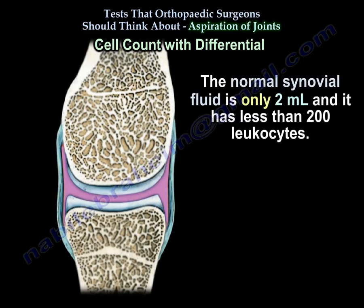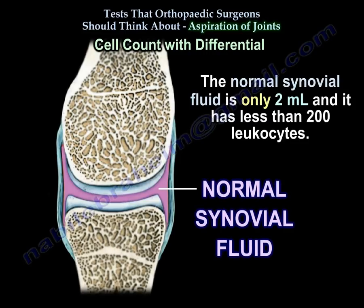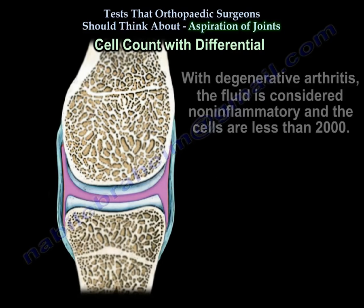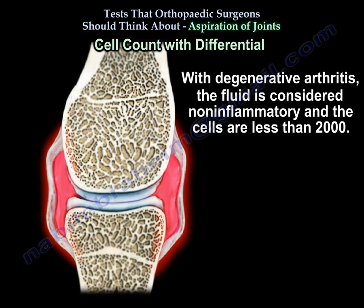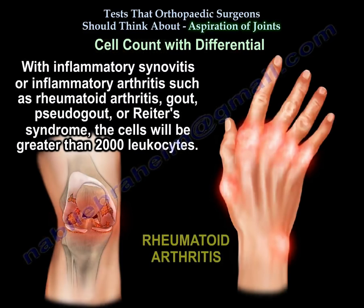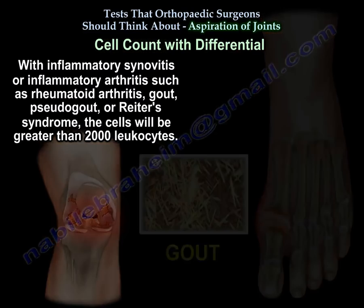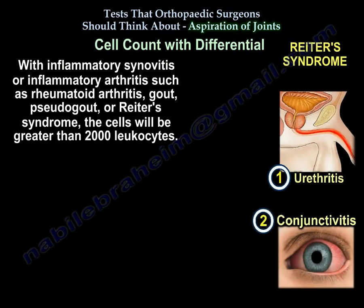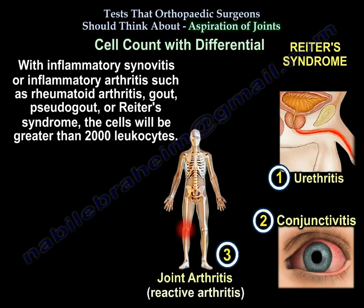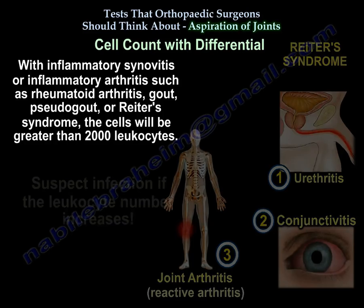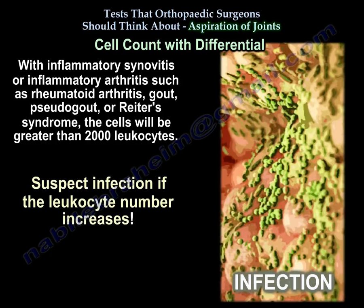Normal synovial fluid is only 2 ml and has less than 200 leukocytes. With degenerative arthritis, the fluid is considered non-inflammatory and the cells are less than 2,000. With inflammatory synovitis or inflammatory arthritis such as rheumatoid arthritis, gout, pseudogout, or Reiter's syndrome, the cells will be greater than 2,000 leukocytes. Suspect infection if the leukocyte number increases.